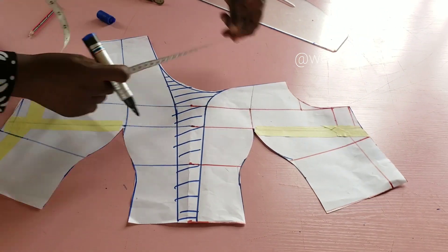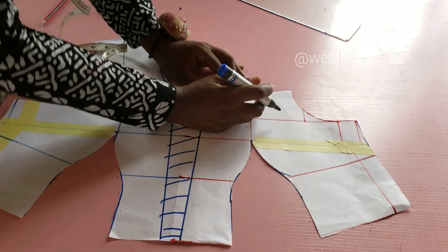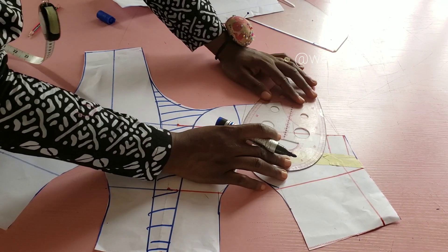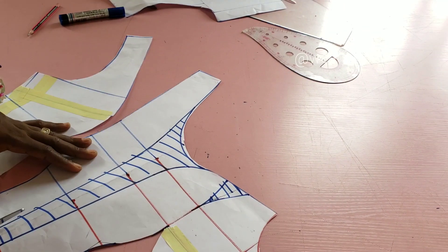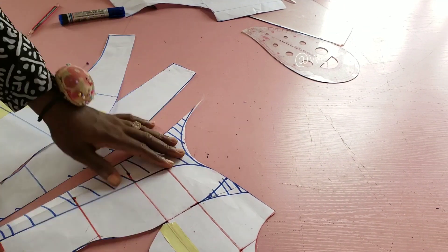So this is my back. For the front, I'll just mark three-quarters of an inch on both sides like that and I'll reshape it like this so that you have a firm grip around the bust area. So I'm just cutting out all my patterns now and I'm labeling everything.